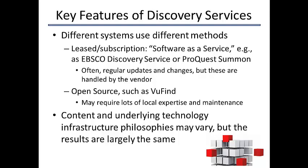They maintain and offer various updates and changes based on customer feedback. The maintenance at the local level is largely restricted to setting the options and maintaining your link resolver. There are also some open source options available, such as VuFind. Open source will require some local expertise, some maintenance, and you may have to host it locally. So, even if the open source software is free, there will be local expenses and staffing you'll have to consider.